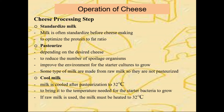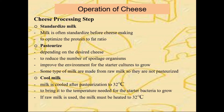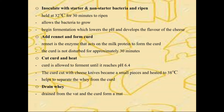Some types of cheese are made from raw milk so they are not pasteurized. After pasteurization, milk is cooled to 32 degrees C to bring it to the temperature needed for the starter bacteria to grow. If raw milk is used, the milk must be heated to 32 degrees C. The starter culture and any non-starter agents are added to the milk and held at 32 degrees C for 30 minutes to ripen. The ripening step allows the bacteria to grow and acidify the milk, which lowers the pH and develops the flavor of the cheese.